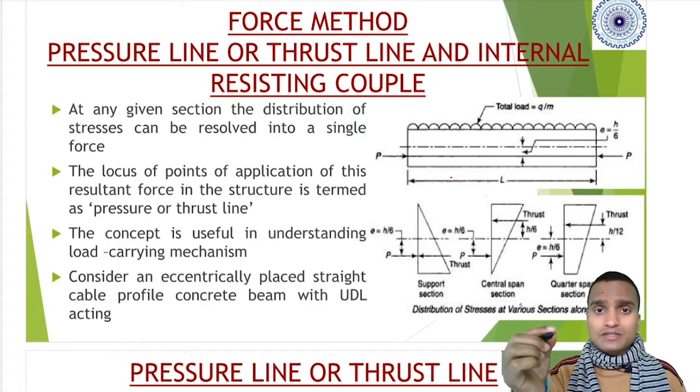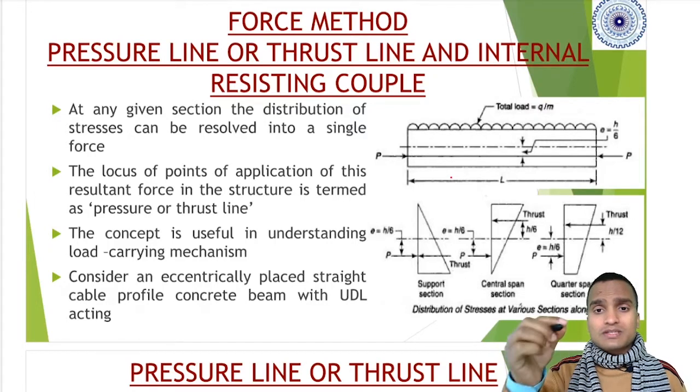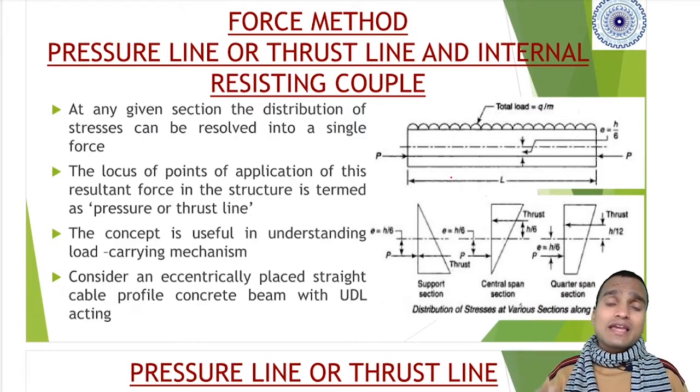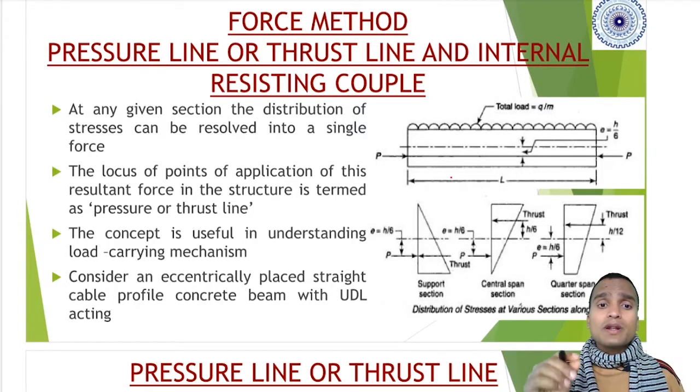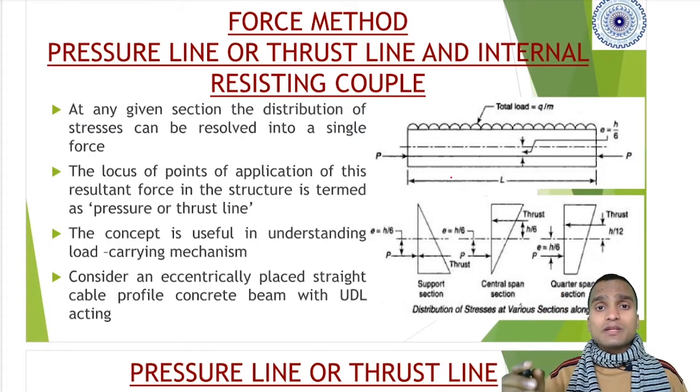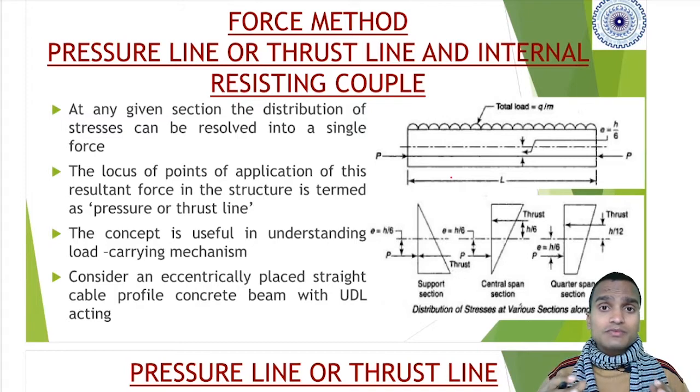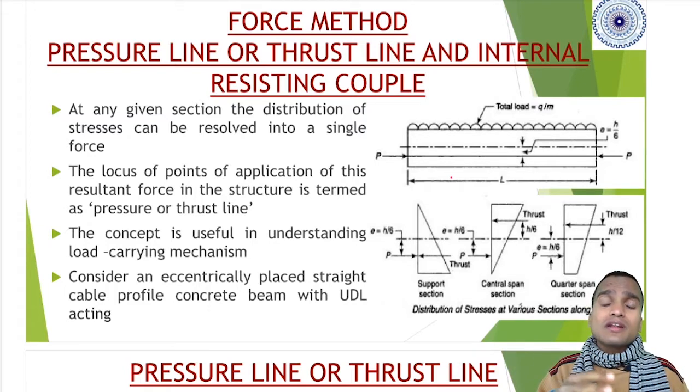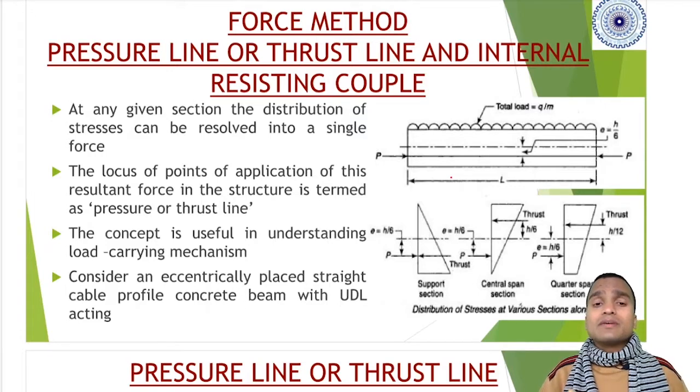Pressure line or thrust line are the lines of locus of points of resultant stresses due to external loads, and these will be compressive in nature. Due to tendons being tensile, a tensile line and a compressive line will try to induce internal couple in the beam section, resisting each other. That's why it's called internal resisting couple method.